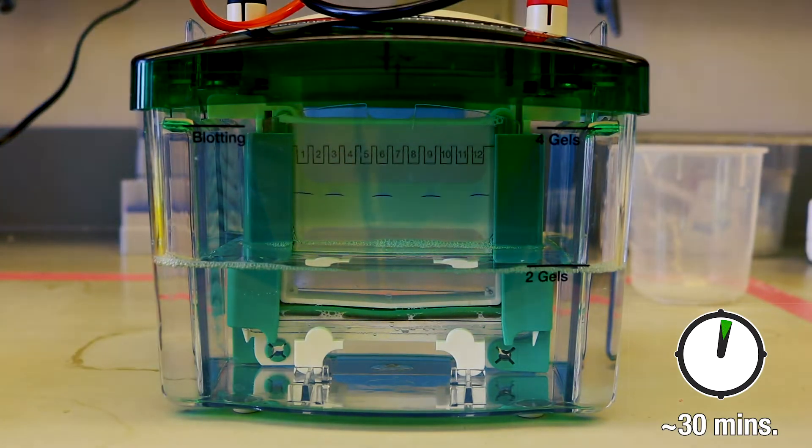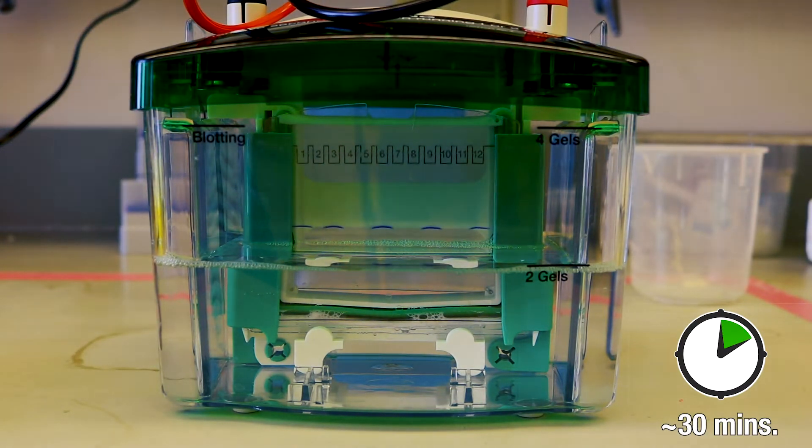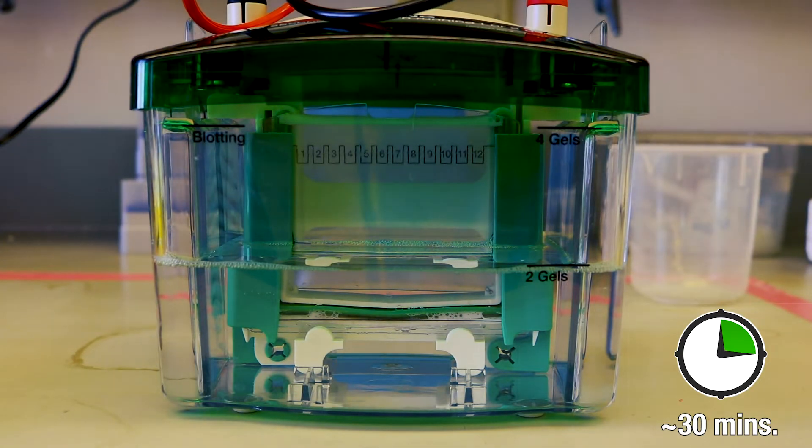When you are running down the gel, the smaller your size is, you're going to go further down. So the higher your weight is, you're going to be at the top, and then the smaller stuff will migrate down the gel.